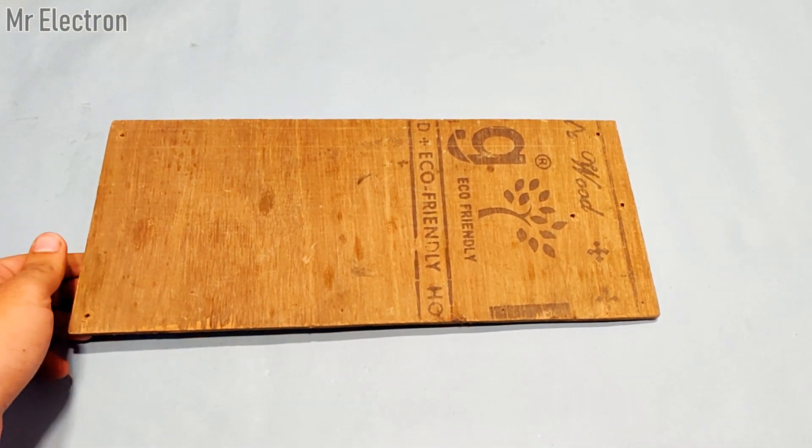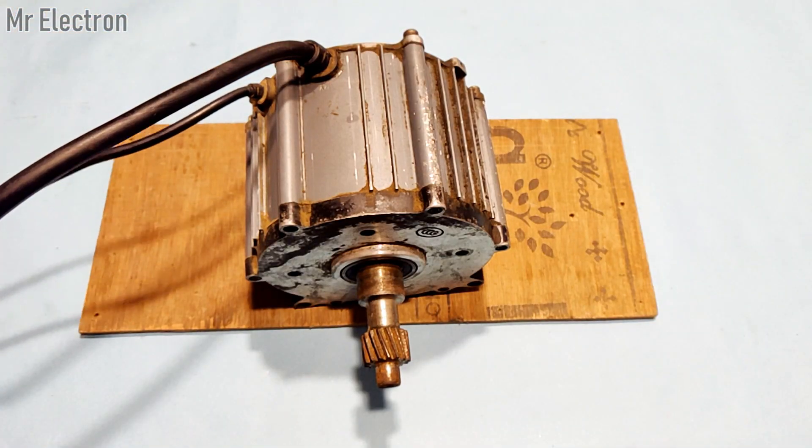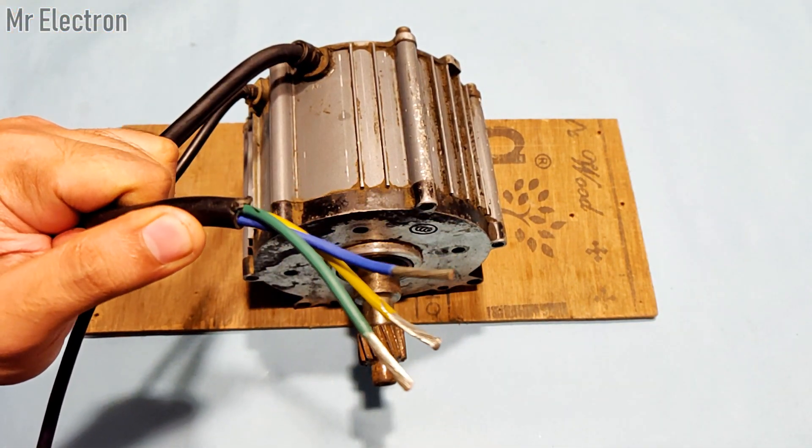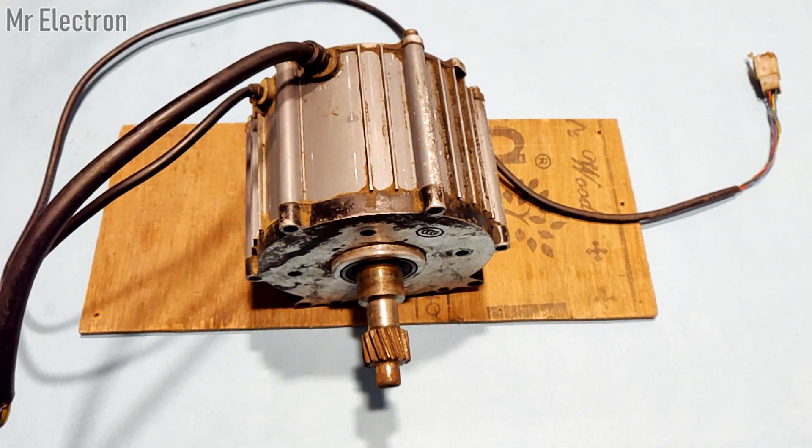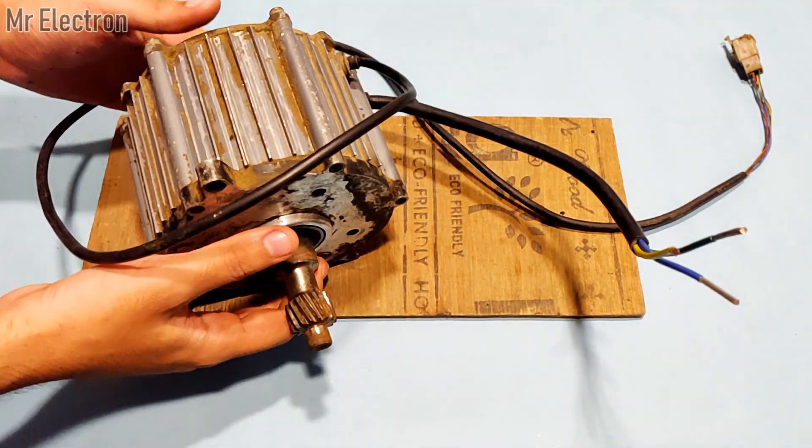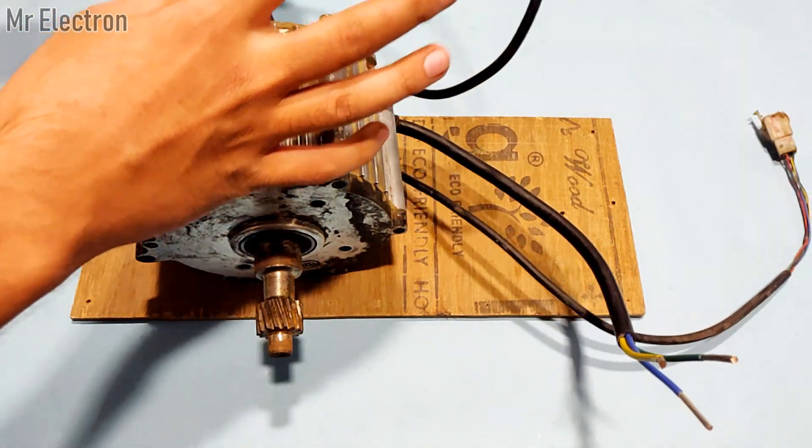Hi, in this video I will be using a permanent magnet BLDC motor as a powerful generator. This BLDC motor is 250 watts and is from an electric rickshaw. A BLDC motor has three terminals.